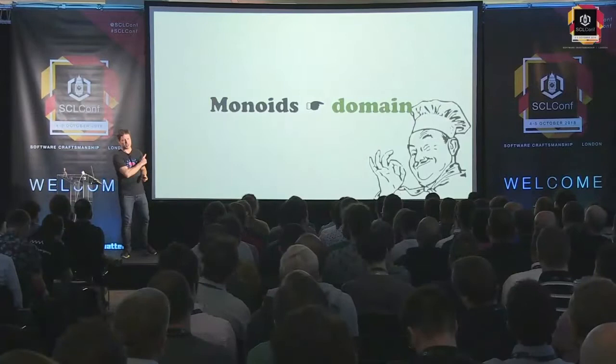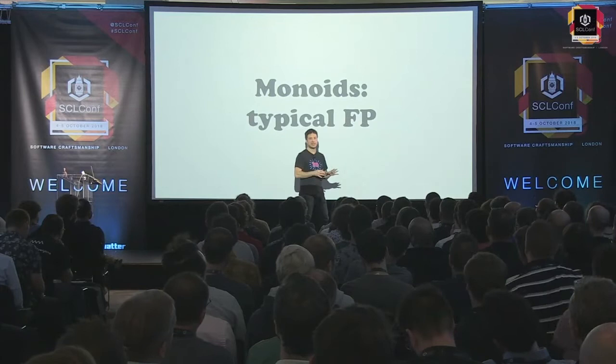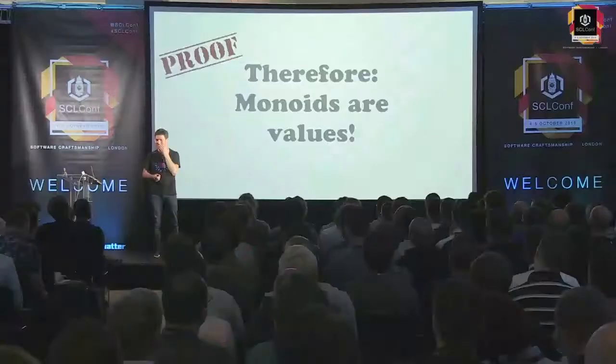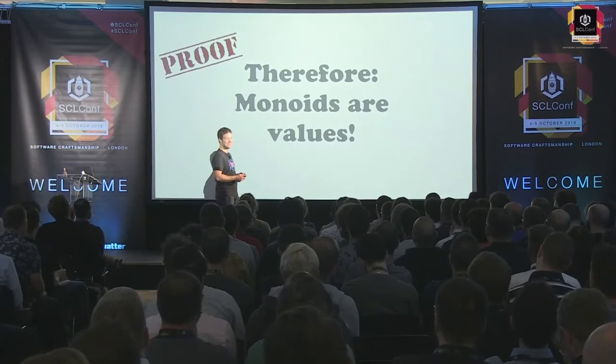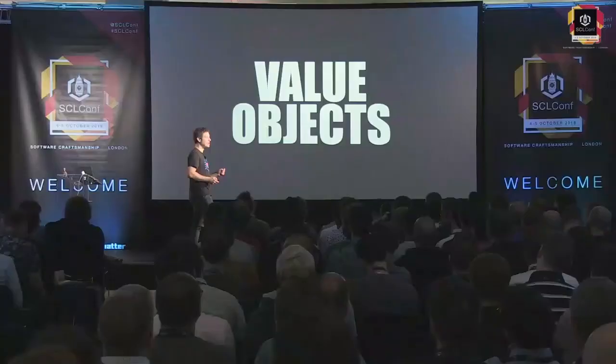Monoids are something typical in functional programming. Haskell, for instance, is full of monoids — always, everywhere. And monoids have to be value objects in the DDD sense, which means they have to be immutable. Value object is a concept from Domain-Driven Design; they must be immutable and their equality is by value. We could say the value object pattern in DDD is just a kind of retro-port of functional programming ideas back into Java or C#.